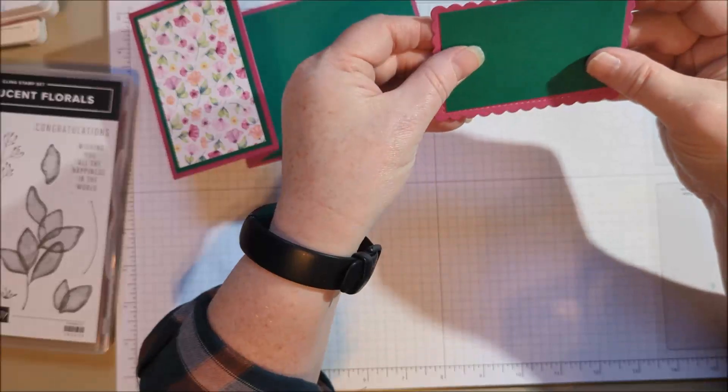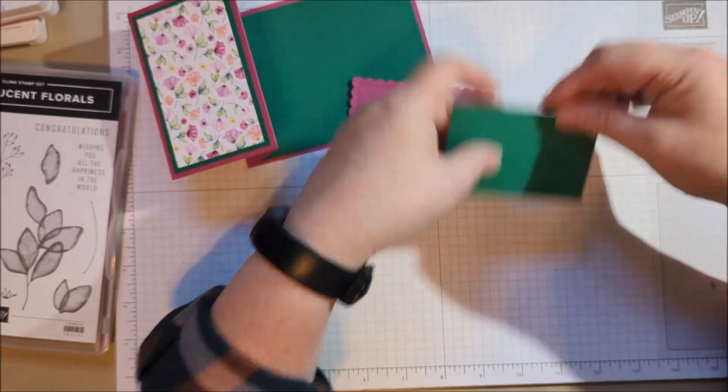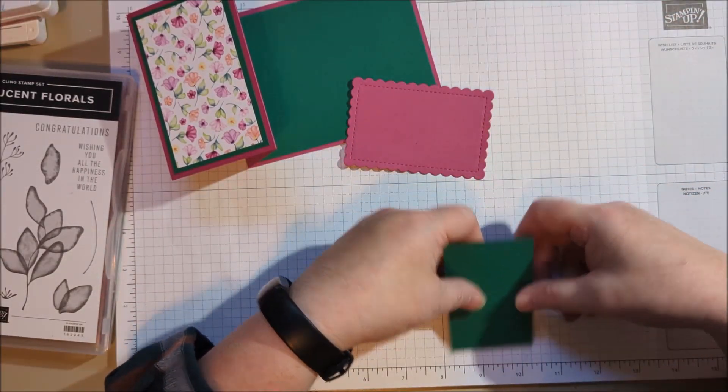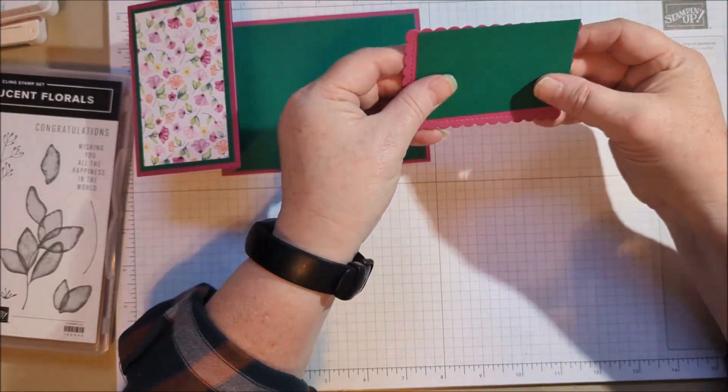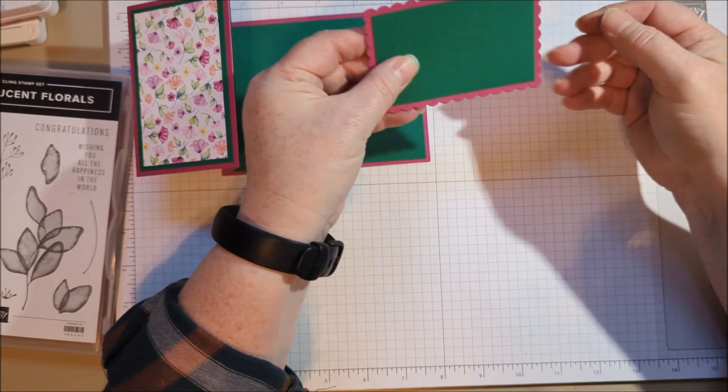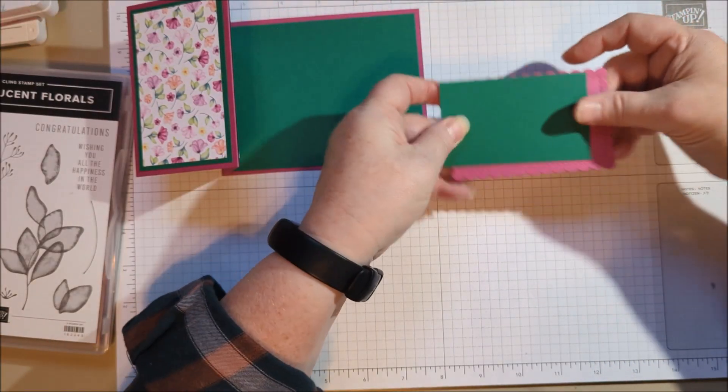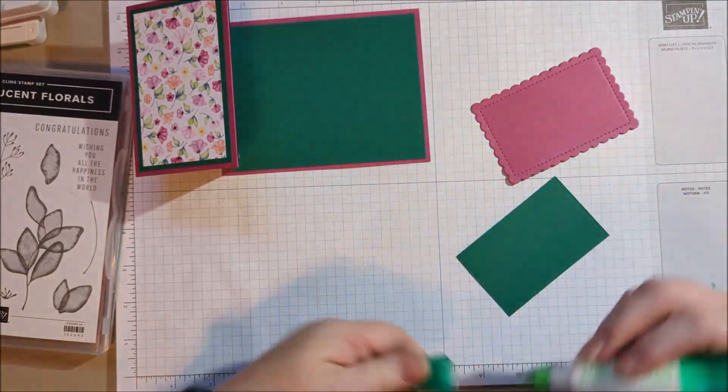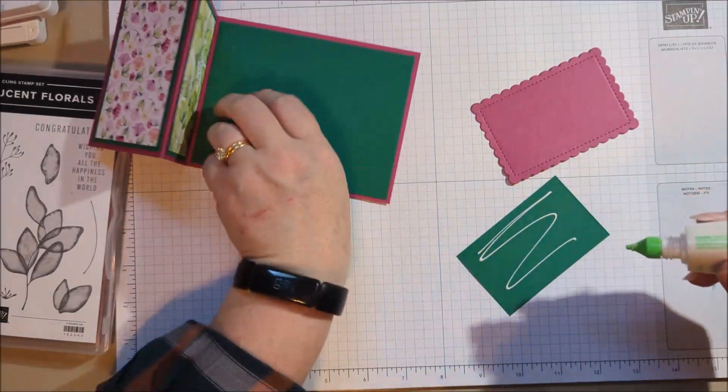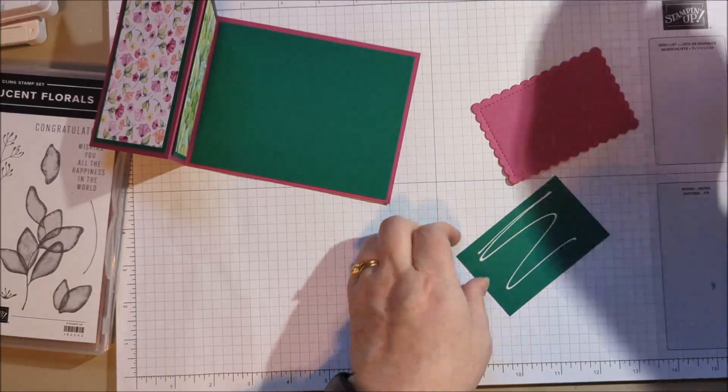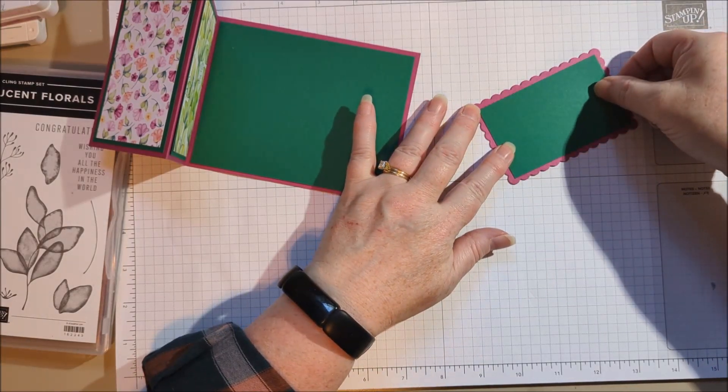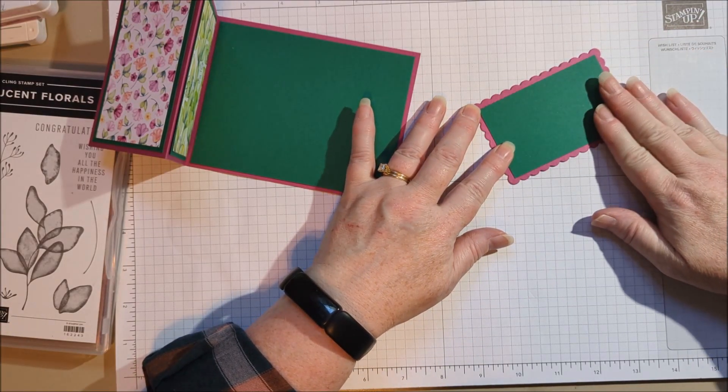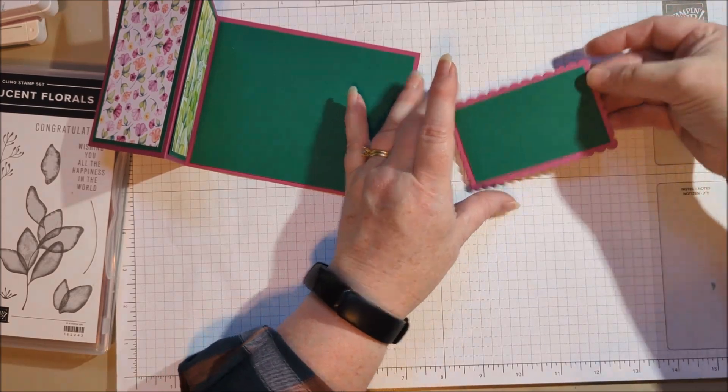So this is two and an eighth by three and three eighths. And that goes just over that stitching. Now I'm going to do my stamping.